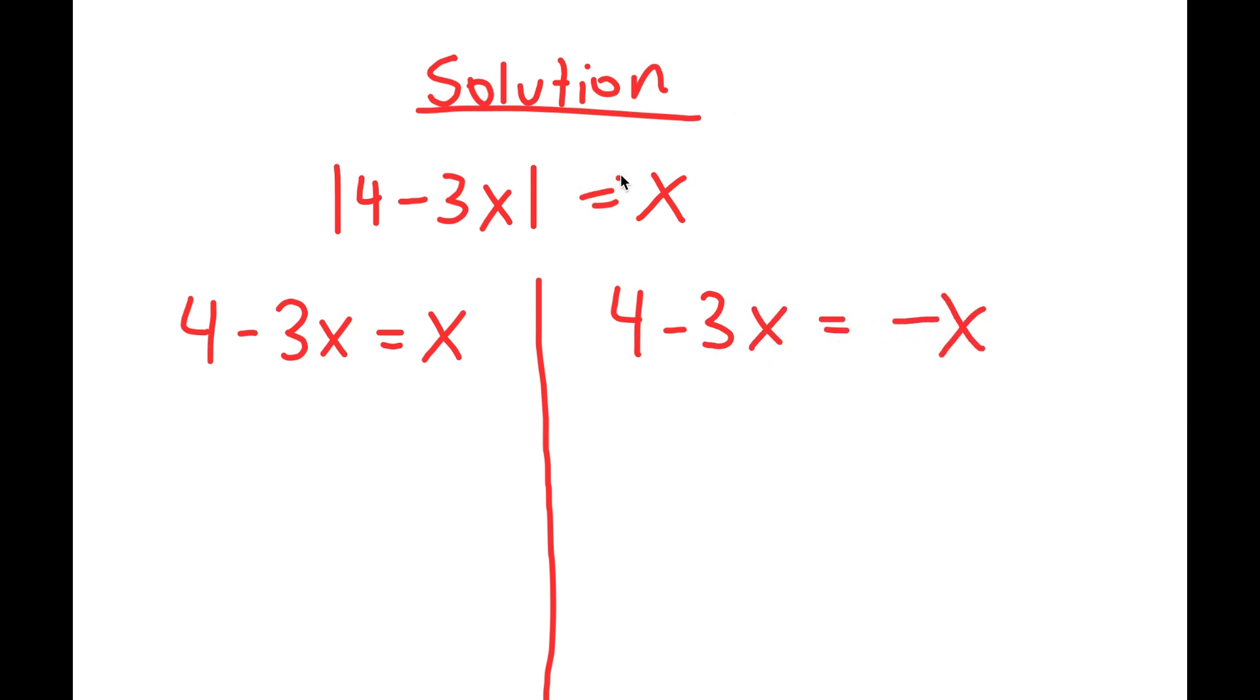Because remember, the absolute value of a function is the distance from zero to that number, which means the absolute value of any number is always positive. However, you can take the absolute value of a negative number and make it equal positive, so we also have to account for that negative number. So now we have two equations from this.